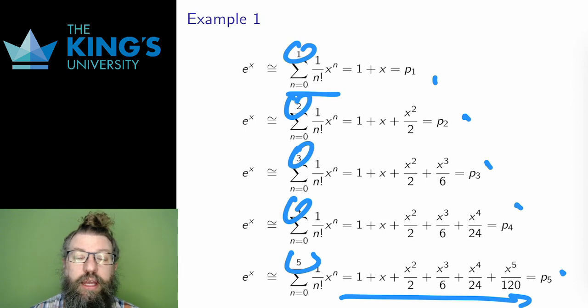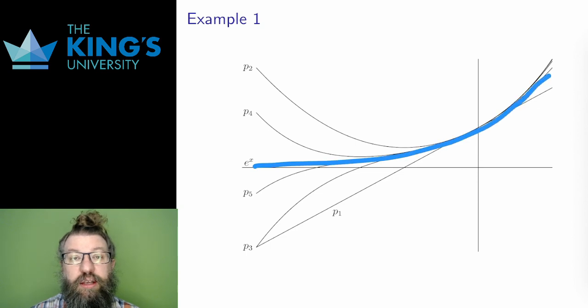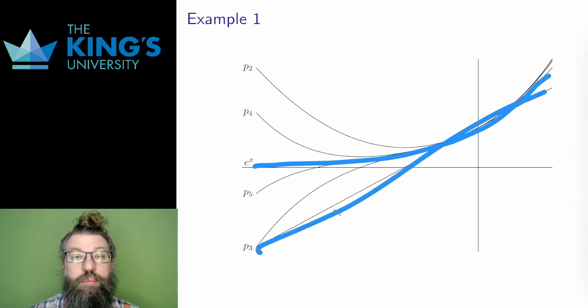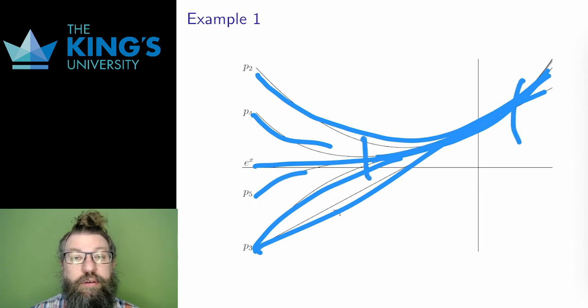What do these look like? Well, here they are on a graph. The exponential is in the middle here. p1 is just a straight line, not a great approximation. p2 is a parabola, a bit better. p3 is a cubic, and captures a little bit more of the exponential. p4 and p5 likewise get closer and closer to describing the function well over a wider interval.